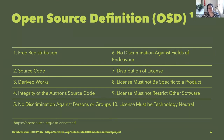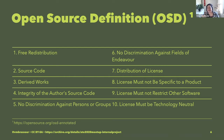There are 10 items that are required. I will read them for the visually impaired. First, free redistribution. Second, source code. Third, derived works. Fourth, integrity of the author's source code. Fifth, no discrimination against persons or groups. Sixth, no discrimination against fields of endeavor. Seventh, the distribution of the license. Eighth, that license must not be specific to a product. Ninth, that license must not restrict other software. And tenth, that license must be technology neutral.